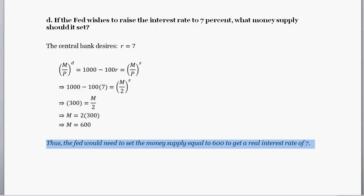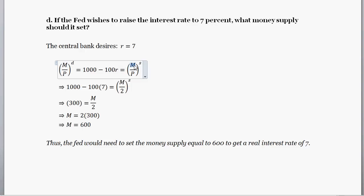To conclude: the central bank needs to set the money supply equal to 600 in order to achieve a real interest rate of 7%. This is a clear hint that at this stage in intermediate macro, the central bank has influence over the money supply and can use it to manipulate real interest rates. Hopefully that was helpful. Thanks and have a good day.